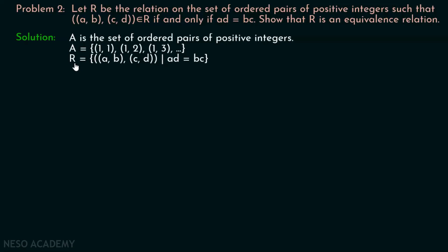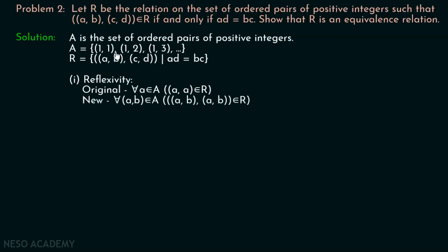First, we will show that this relation is reflexive. The definition of reflexivity says: for all A belonging to set A, A must belong to R. Here, instead of A we have an ordered pair, since every element of set A is an ordered pair. So we replace A with the ordered pair (A, B). For all (A, B) belonging to set A, the pair ((A, B), (A, B)) must belong to R according to the definition of reflexivity.